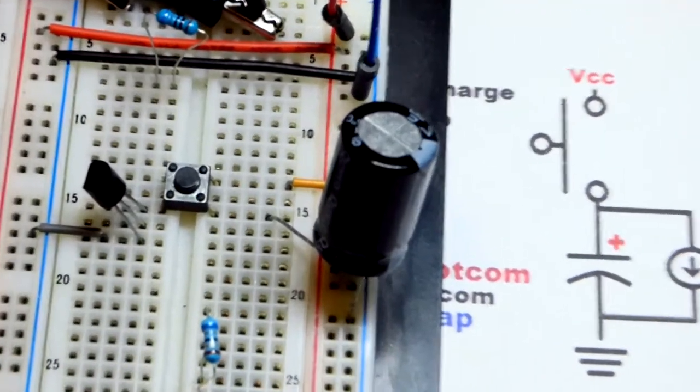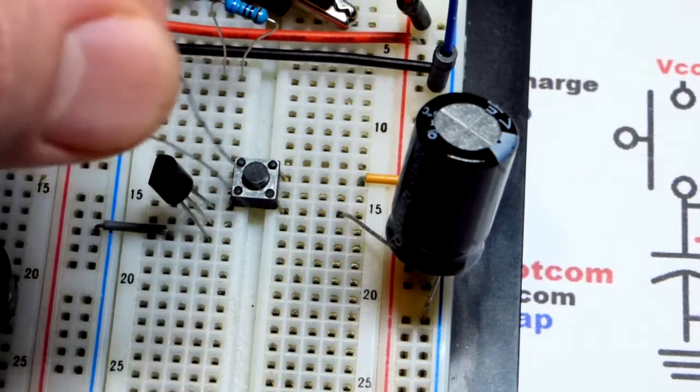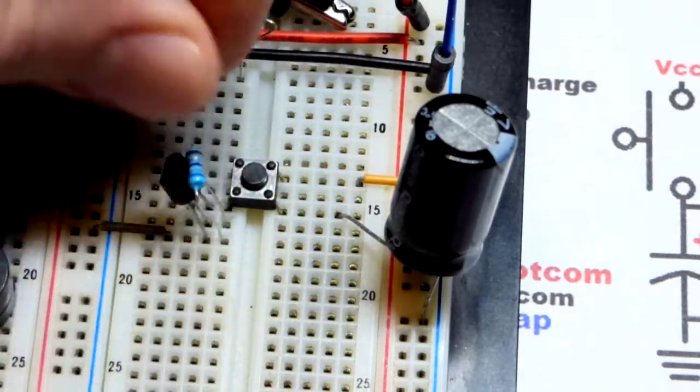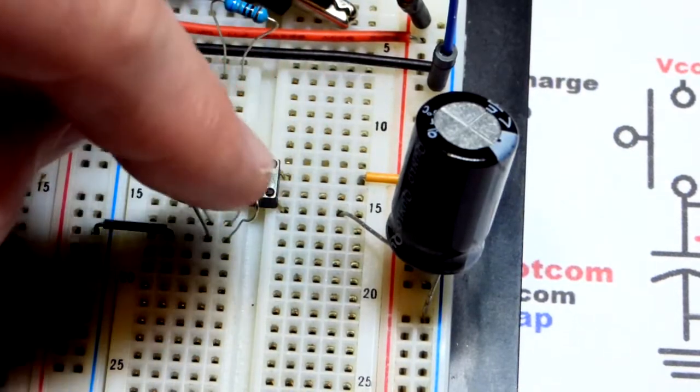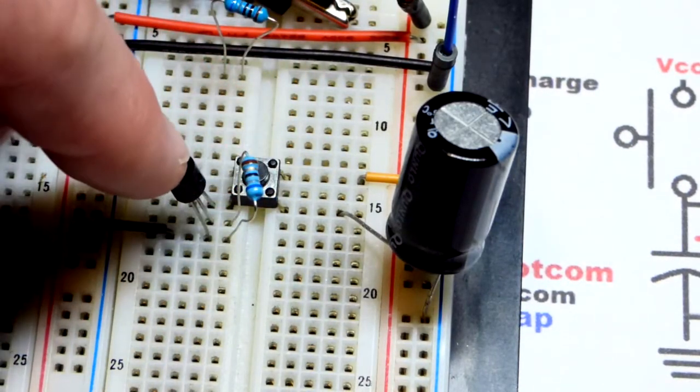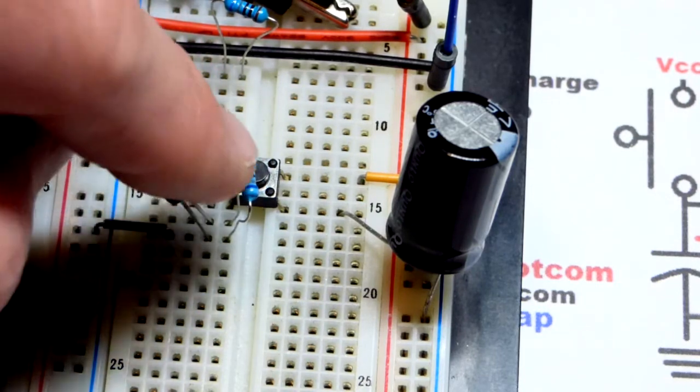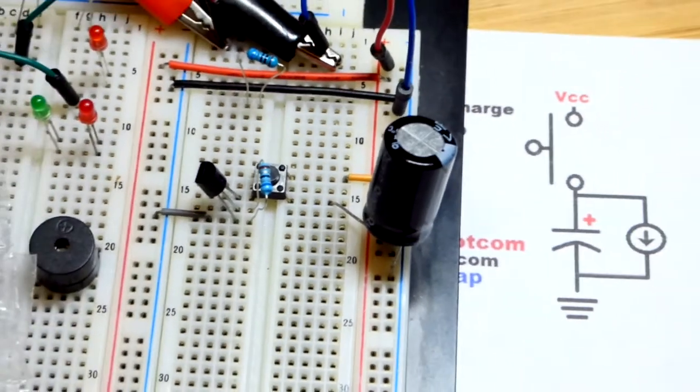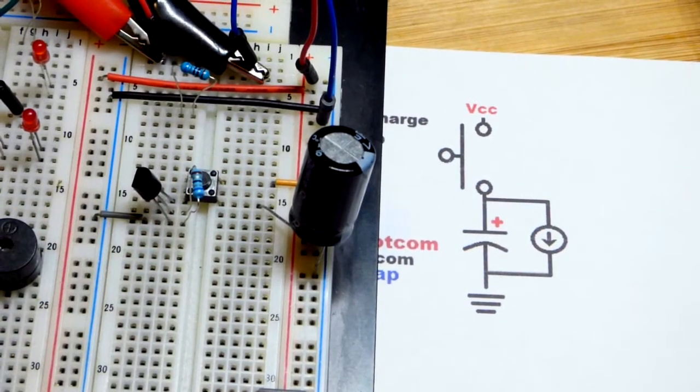We're going to take this 68 ohm resistor and that will give us a pretty perfect 1 milliamp of current. I did that in an earlier video. That's what's setting it. Higher resistance results in less current, lower resistance results in more current. Don't go below 6.8 ohms though because that will be more than 10 milliamps of current. So that's 1 tenth the resistance, 10 times the current from what we have here.